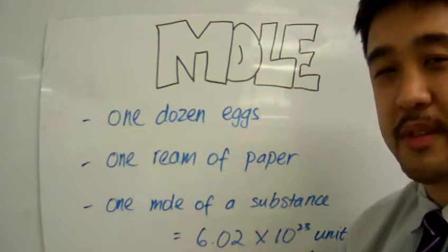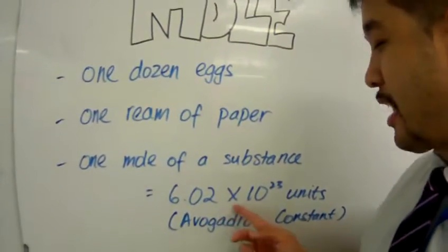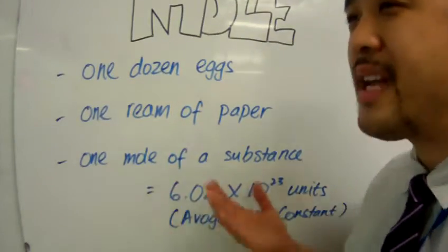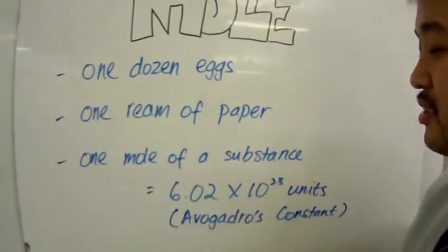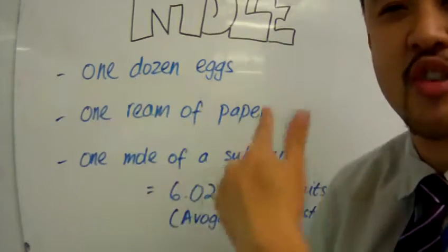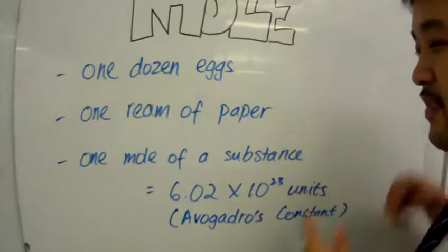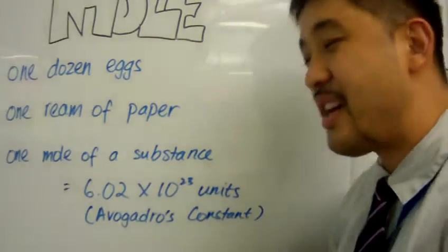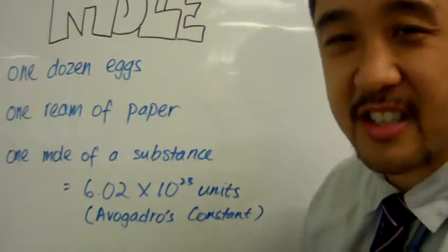It means 6.02 times 10 to the 23 units. So one mole of any substance is equivalent to 6.02 times 10 to the 23 units, and this 6.02 times 10 to the 23 units is known as Avogadro's constant.